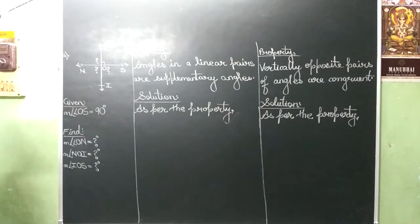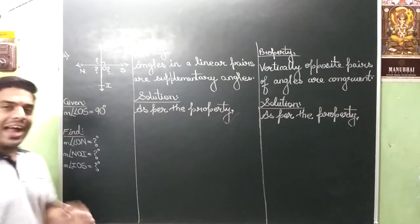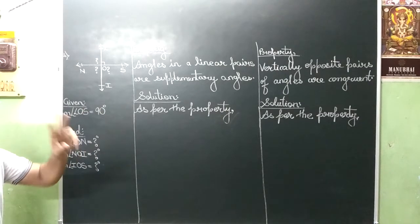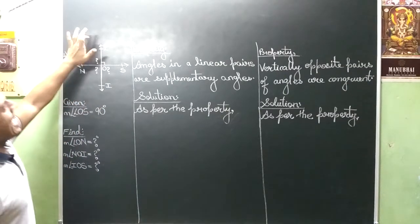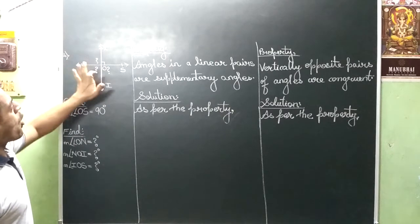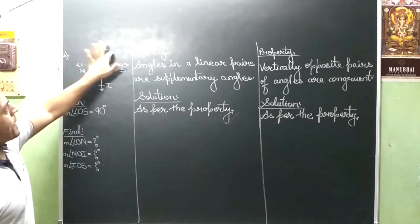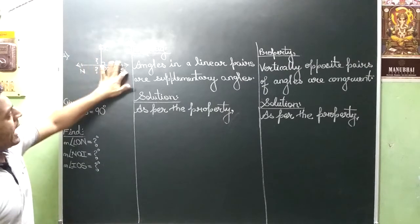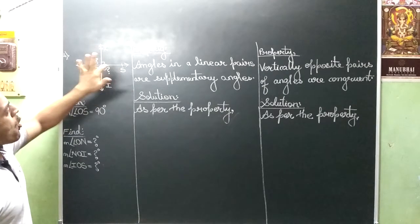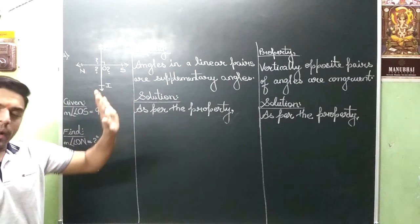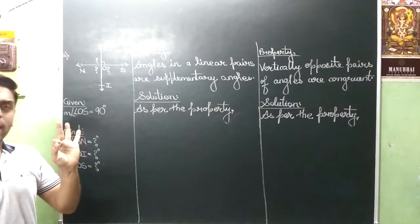And the property is angles in a linear pair are supplementary angles. So, the two angles, LOS with NON. Anyhow the pair answer will retain the signal.